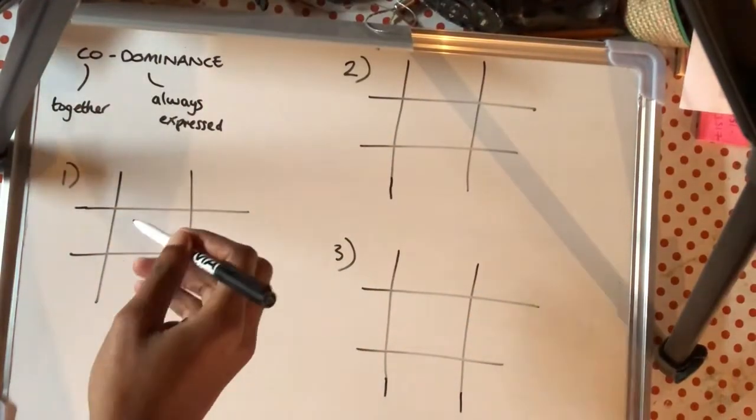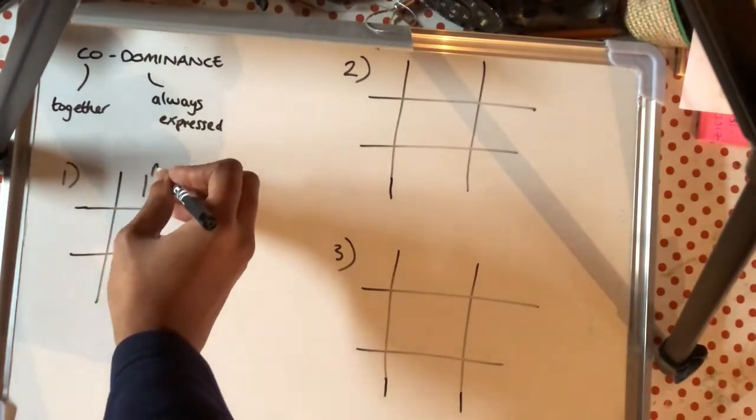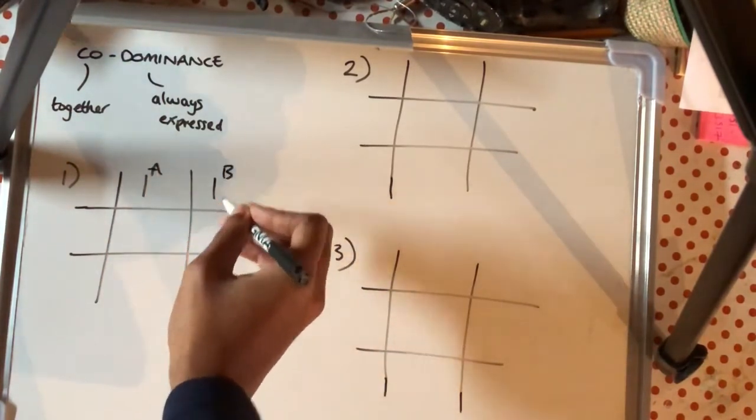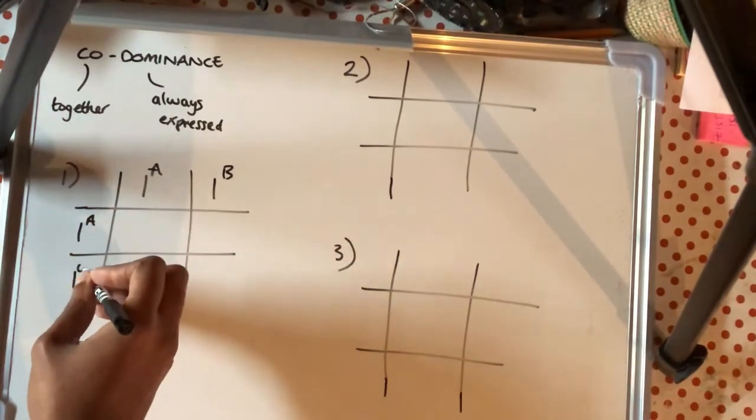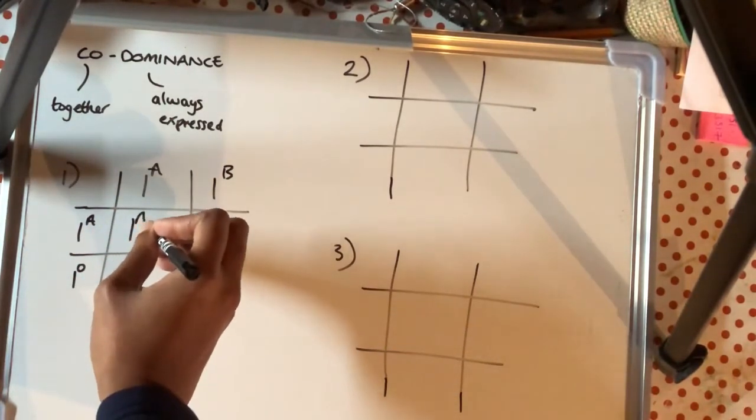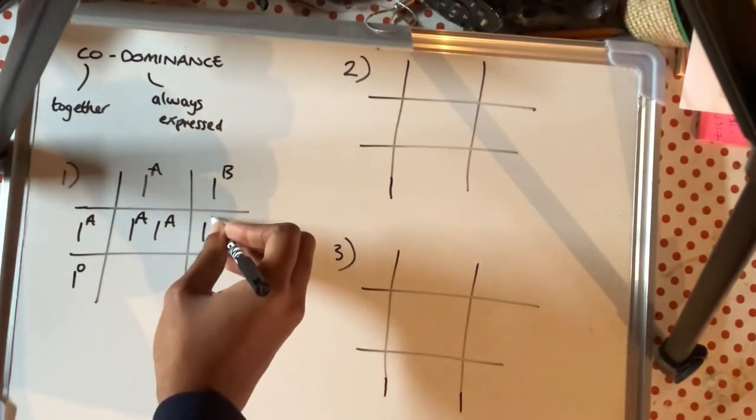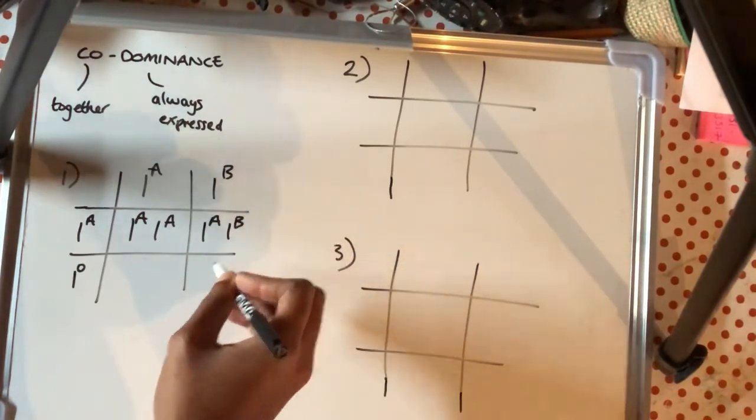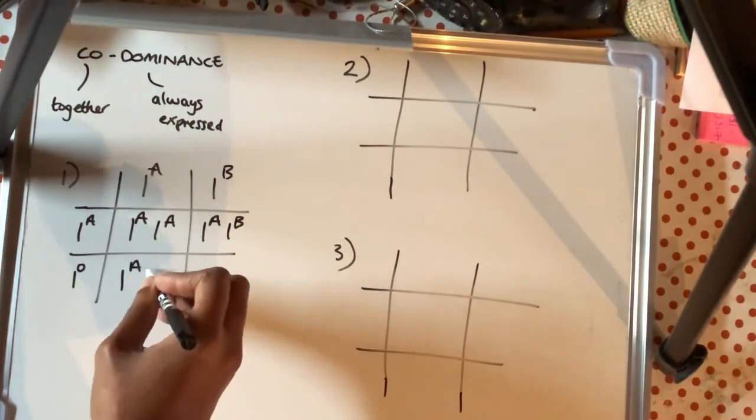Okay, so if we're looking at the answers to these questions now, you're just doing your standard Punnett square and just trying to figure out what the genotypes are. So AB crossed with AO, you should get IA, IA, IA, IB, IA, IO, IB, IO.